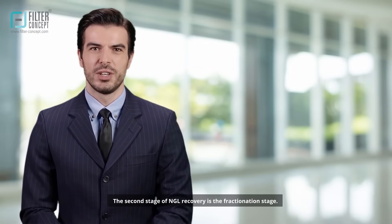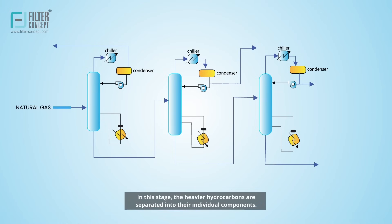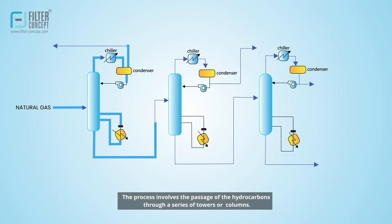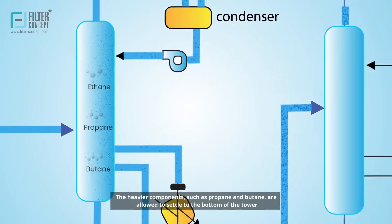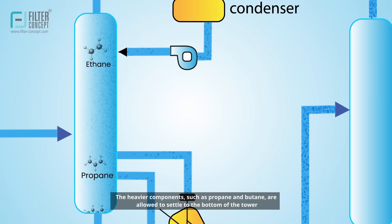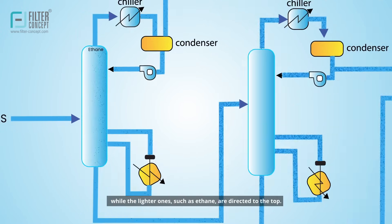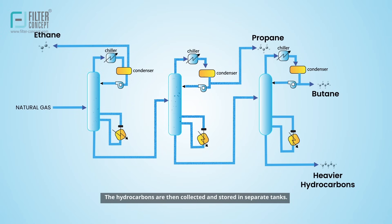The second stage of NGL recovery is the fractionation stage. In this stage, the heavier hydrocarbons are separated into their individual components through a series of towers or columns. The heavier components, such as propane and butane, settle to the bottom, while the lighter ones, such as ethane, are directed to the top. The hydrocarbons are then collected and stored in separate tanks.